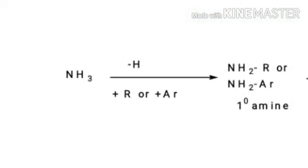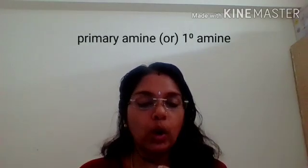These amines can be classified into primary, secondary, and tertiary amines according to whether one, two, or three hydrogen atoms from ammonia are replaced by an alkyl or aryl group. The molecular formula of ammonia is NH3. If one hydrogen atom is replaced by an alkyl group (R) or aryl group (Ar), we get the compound RNH2, which is termed a primary amine or 1° amine. The main functional group present in the primary amine is NH2.